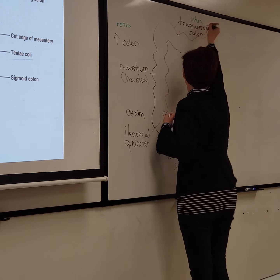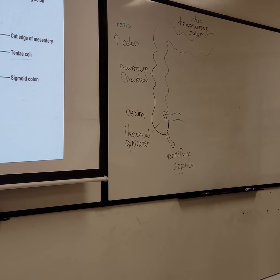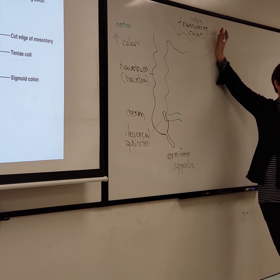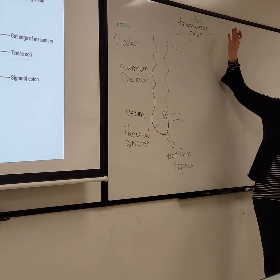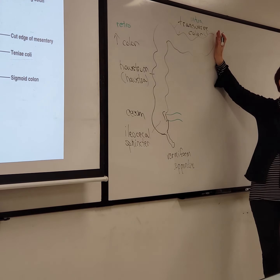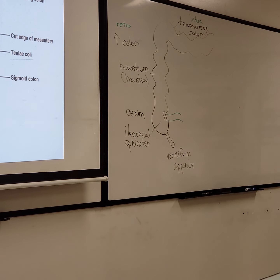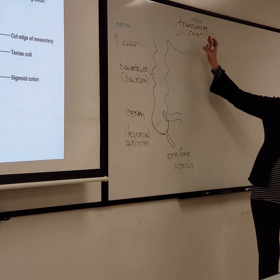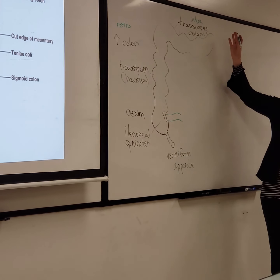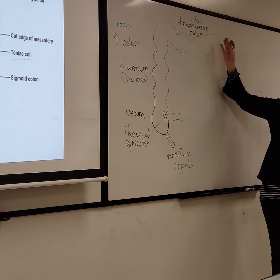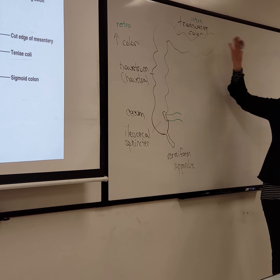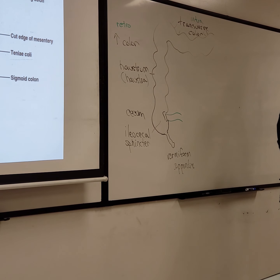The blood supply to the large intestine so far — the ascending and transverse colon — is from the superior mesenteric artery, which stops at that region. That same location is where the parasympathetic supply via the vagus nerve stops. The vagus nerve supplies the stomach, all of the small intestine, and the ascending and transverse colon. After that point, the parasympathetic switches to the pelvic splanchnic nerves.